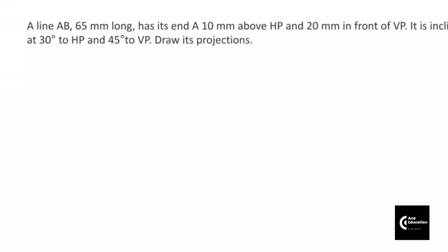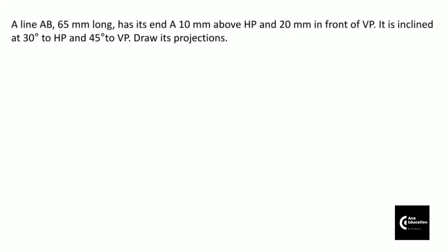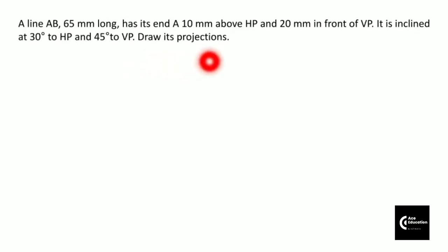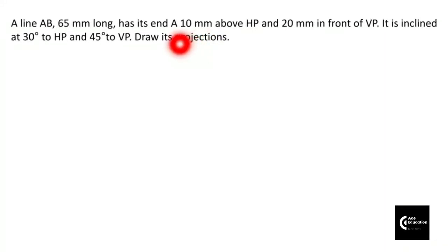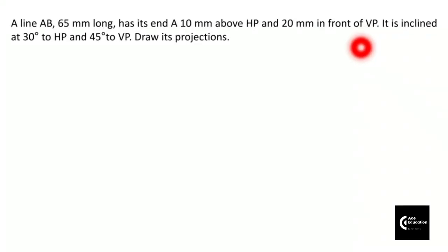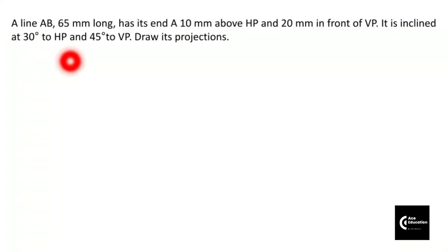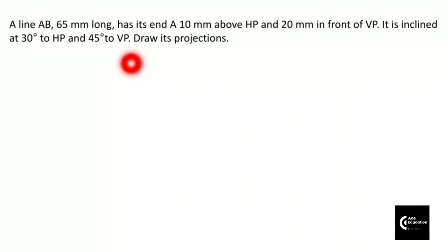Here is the problem. A line AB 65mm long has its end A 10mm above HP and 20mm in front of VP. In front of vertical plane means you are getting projection on a horizontal plane which you can rotate downwards. It is also given inclined to HP by 30 degrees and 45 degrees to VP. So the true inclinations theta and phi are given in the problem.